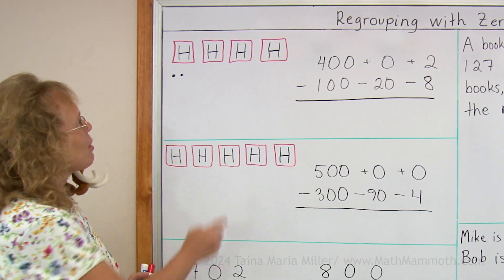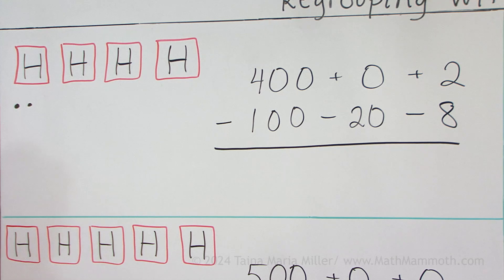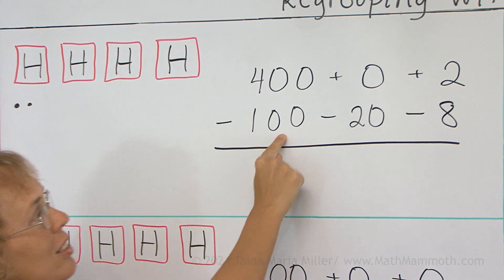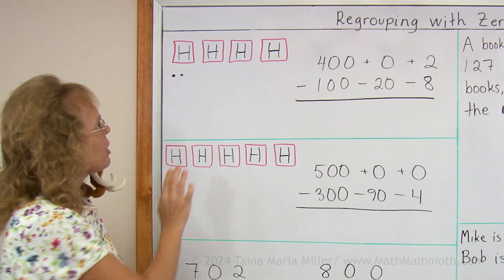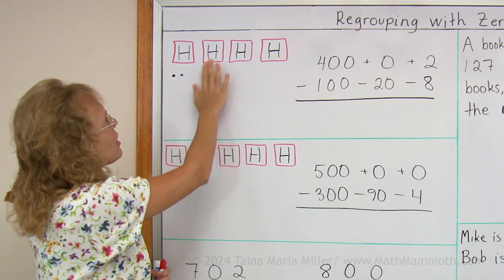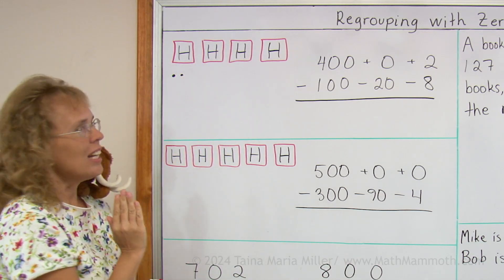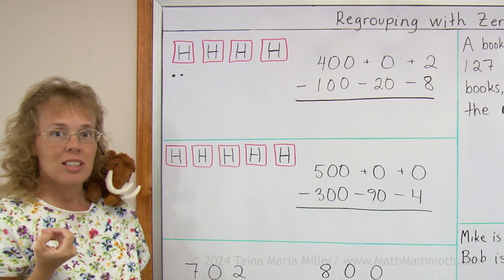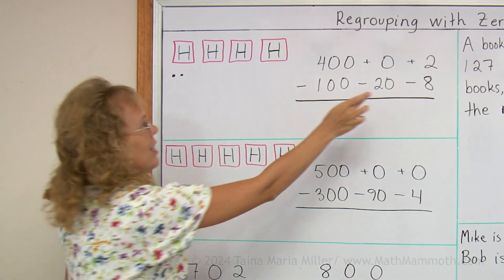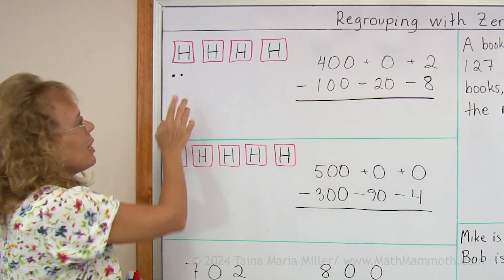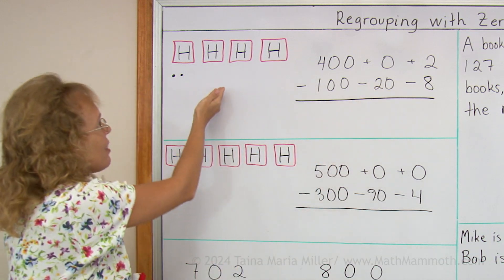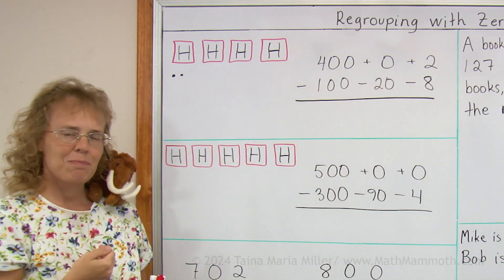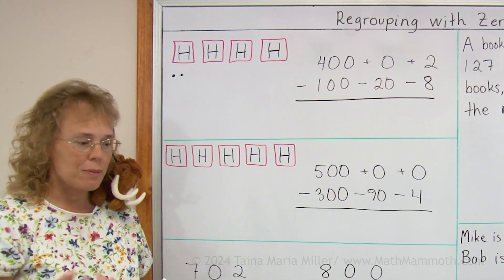Now let's say we have 402. We need to subtract 128. So how do we do that? If you look at this model here, these pictures, I cannot subtract 8 — that's not enough. I cannot subtract 20 because I don't have any tens. So what do I do? What can I do?